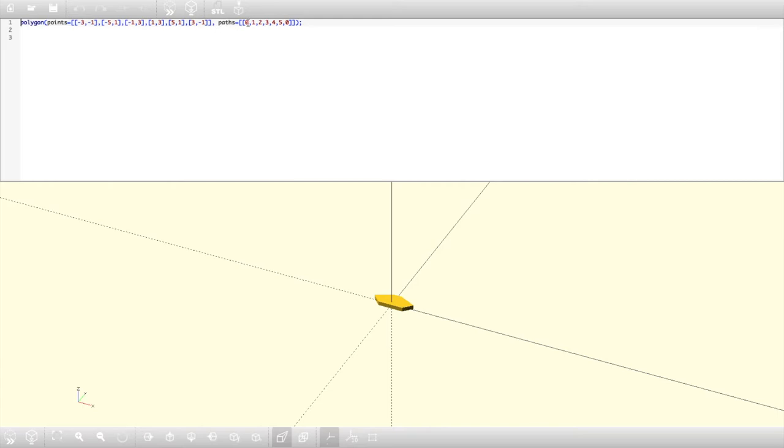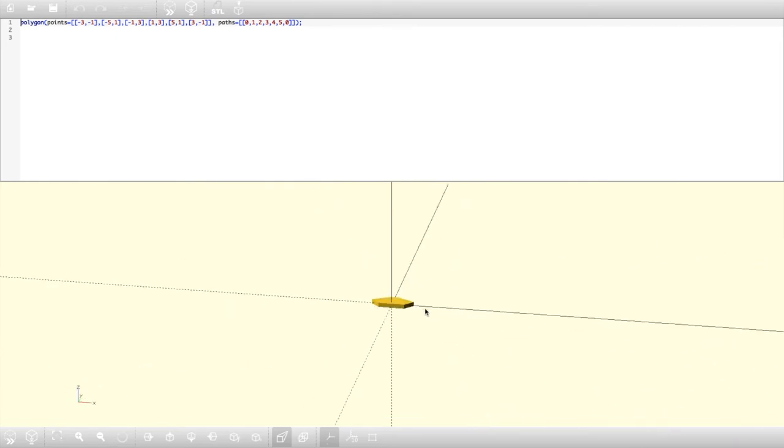But then we also add this path. And what the path does, that draws out your shape. So basically connect your points or connect your dots starting at your first one, which is zero, one, two, three, four, five, and then draw back to zero. And when you preview that, that's when you end up with a 2D shape like this.